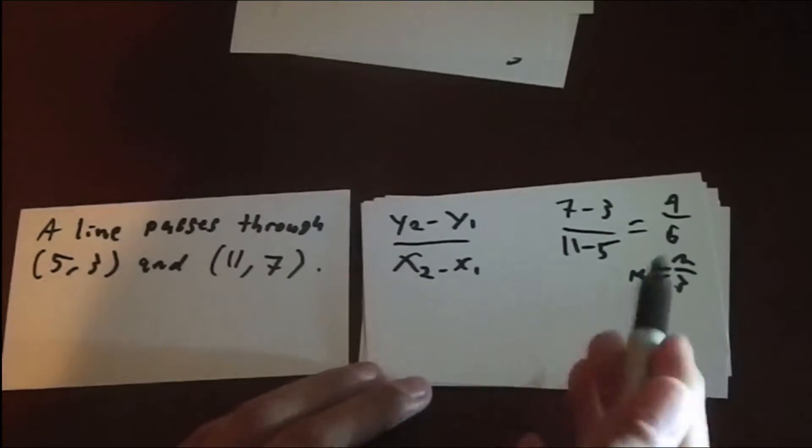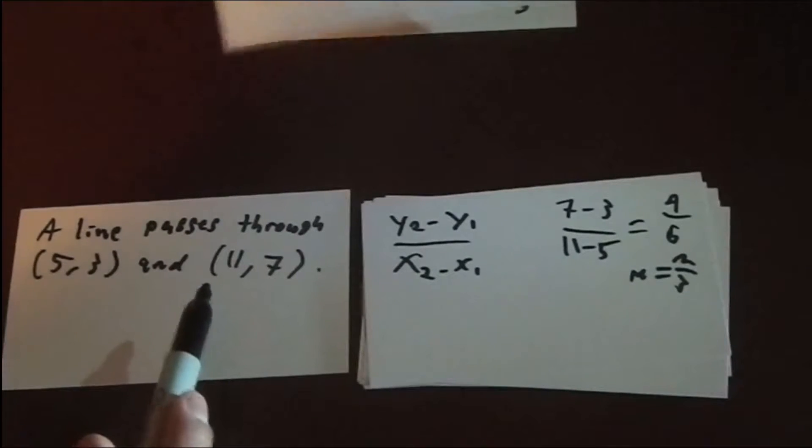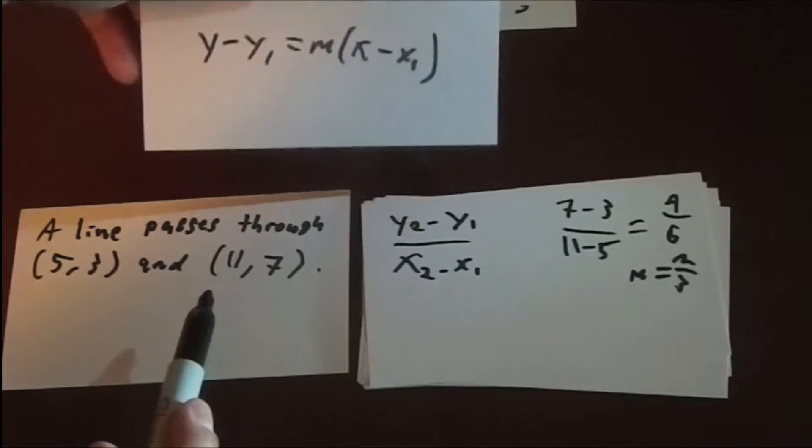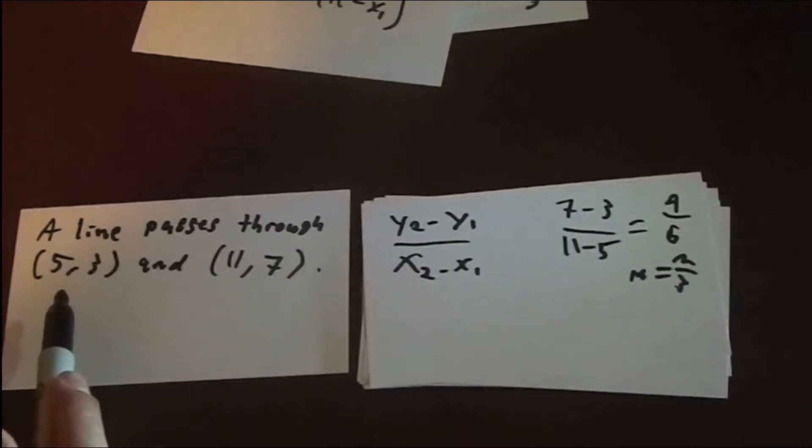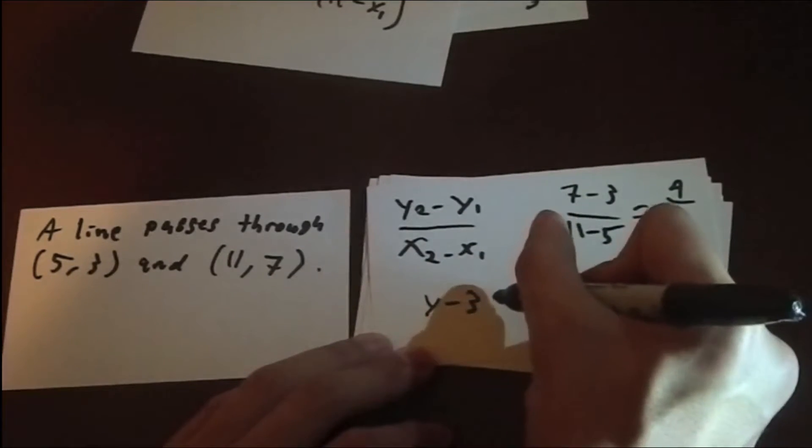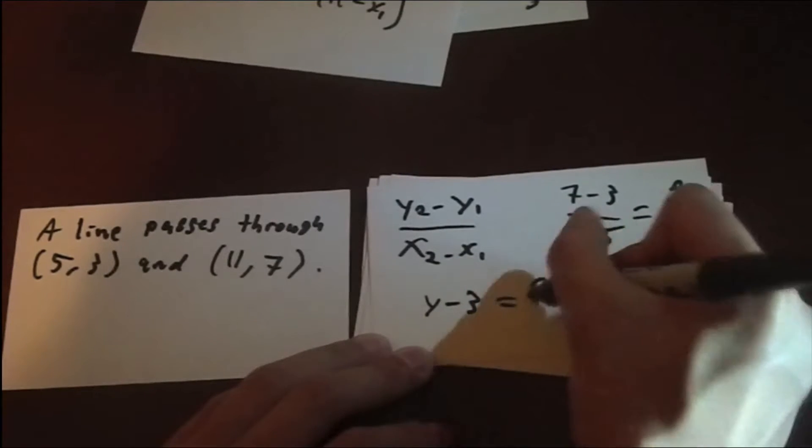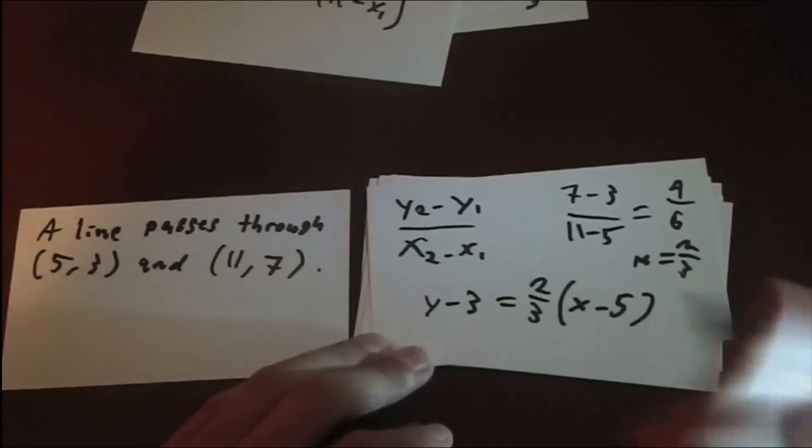Now that we have our slope, we can just plug in either one of these ordered pairs into the point-slope equation. I'm going to use this one on the left, (5, 3), because the numbers are smaller and easier to deal with. You can choose either one, though. It's going to end up being y minus 3 equals 2 thirds times (x minus 5). So, that's our point-slope equation.